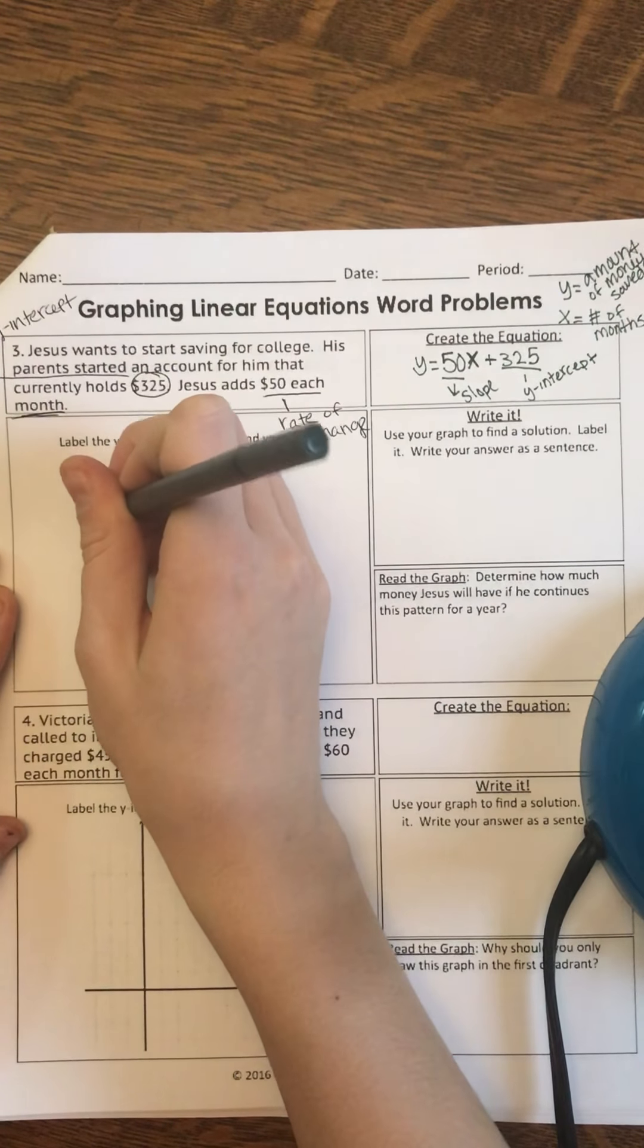And I'm going to do it one more time so you guys can see. So now I'm at 375. I'm at 1, 375. I go up another 50. And I'm at 2, 425. There we go. So I have two points of my graph.